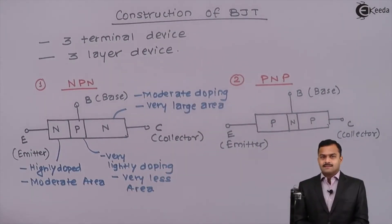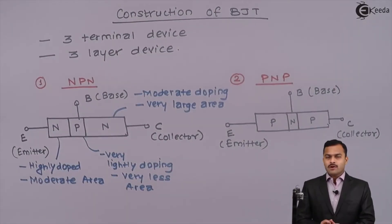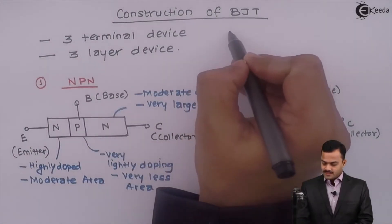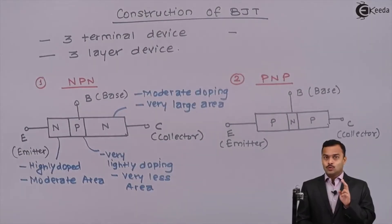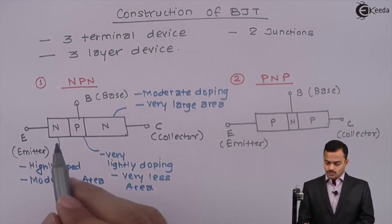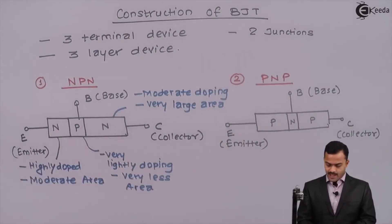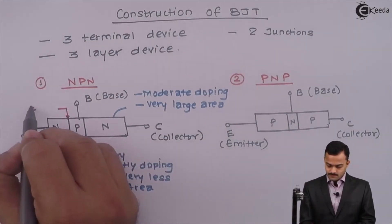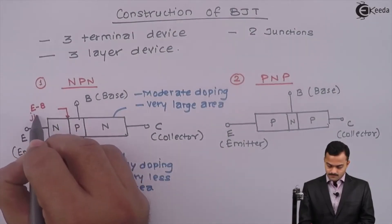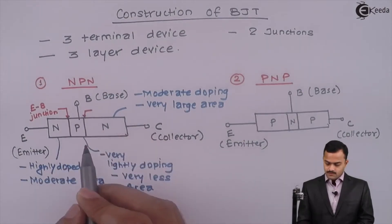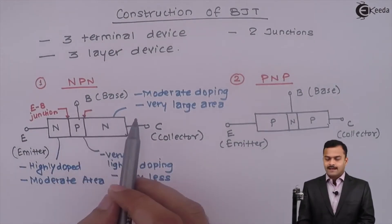In a transistor, while making, we keep all these three things in mind. Also, we have to keep in mind one thing. Since it is a three-layer device, obviously it is forming two junctions. Here we have one junction between Emitter and Base. And another junction between Collector to Base.